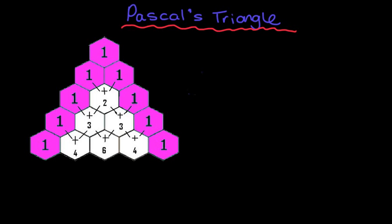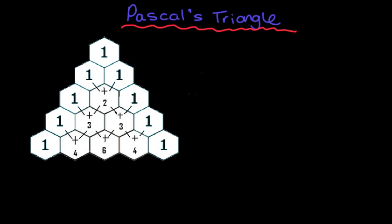And then from those ones, we can then create the other numbers. So let's have a look how this is created. We've got one. The next two are where we extend our pattern from. We are always adding the top two numbers to make that third number, or the number below.